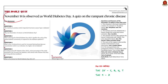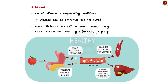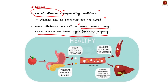November 14 is observed as World Diabetes Day. Let us quickly understand some basics about Diabetes Mellitus. Diabetes is a chronic disease — a condition that has long-lasting effects and can be controlled but not cured. Diabetes occurs when our body cannot process blood sugar or glucose properly. Our body breaks food into glucose, which is used as fuel by cells. When glucose enters the bloodstream, the pancreas releases insulin, which helps glucose enter the cells. In diabetes, the pancreas does not make enough insulin, leading to high glucose levels in the blood, which in turn causes diabetes.